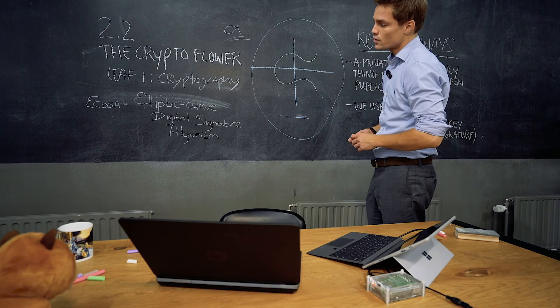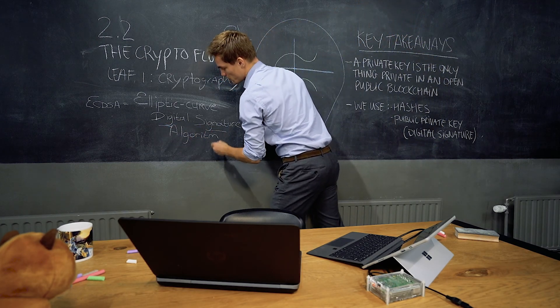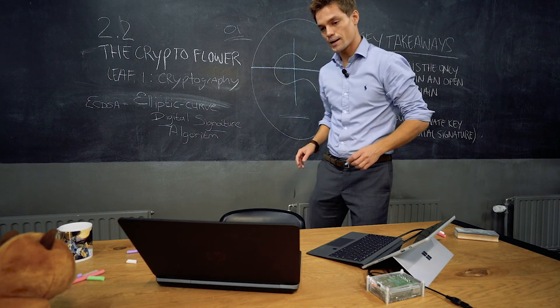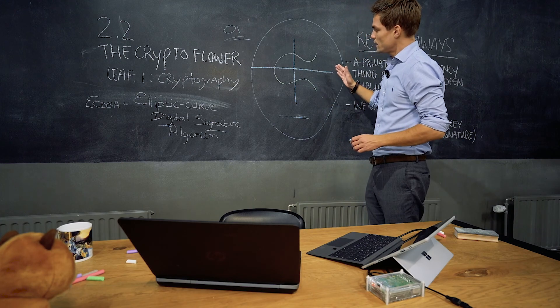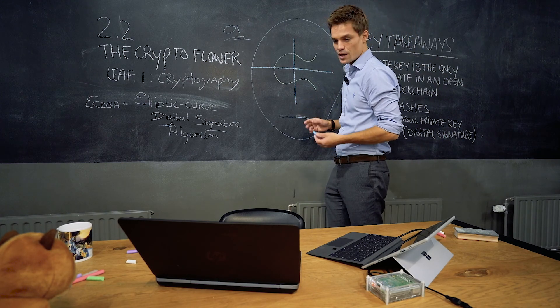So what is the elliptic curve digital signature? You see it here, public-private key pair, which we use to sign for money, which we will explain later on. It actually is not that easy or it's not that hard. Just imagine the following.